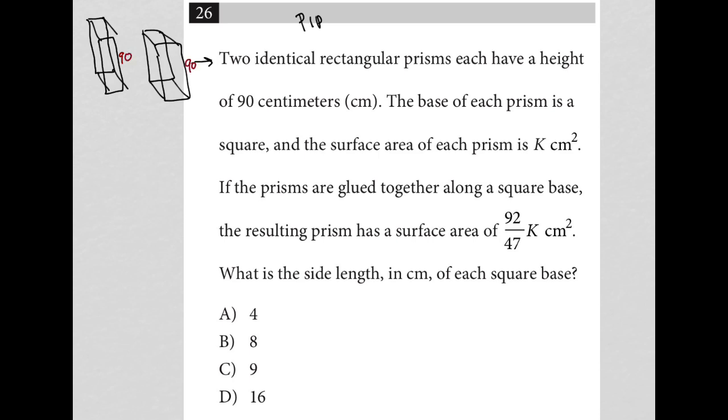The next sentence says the base of each prism is a square, which is exactly how I drew it. So that was expected. And the surface area of each prism is K centimeters squared. Okay, well SA for surface area is equal to K centimeters squared, but I think I can do better than that. How do I break down K? How do you find the surface area for one of these rectangular prisms?